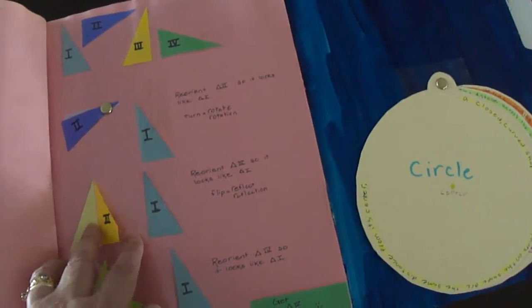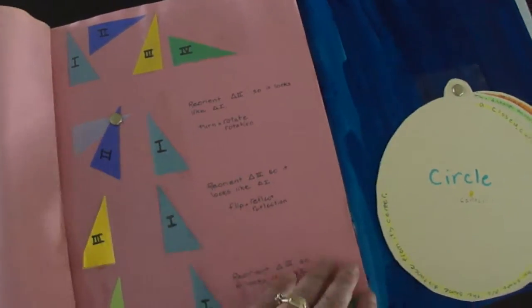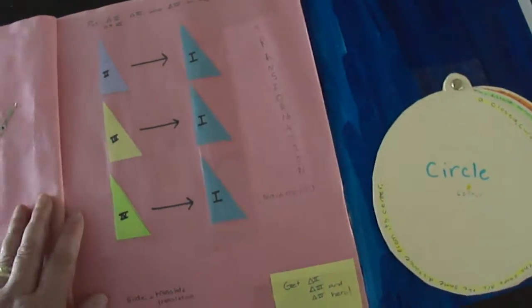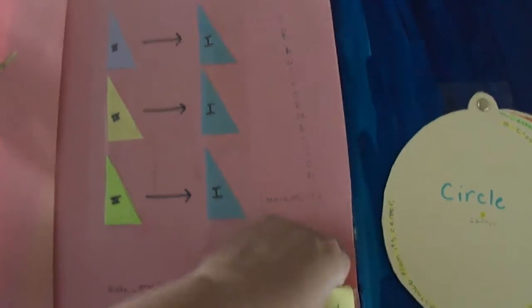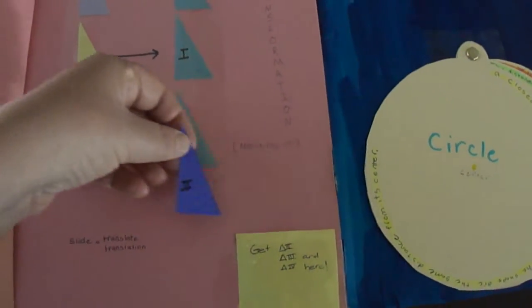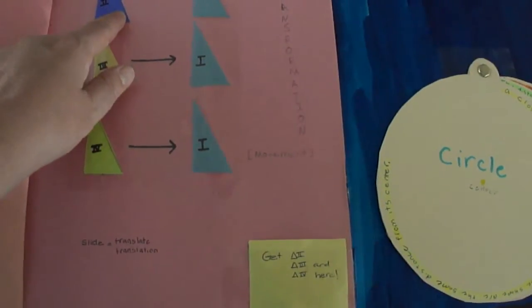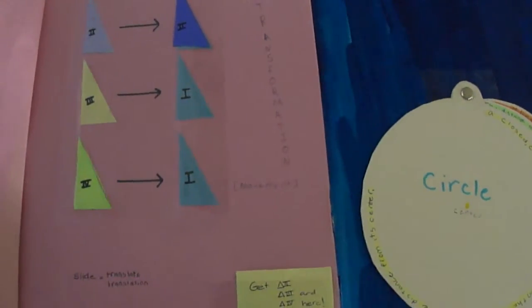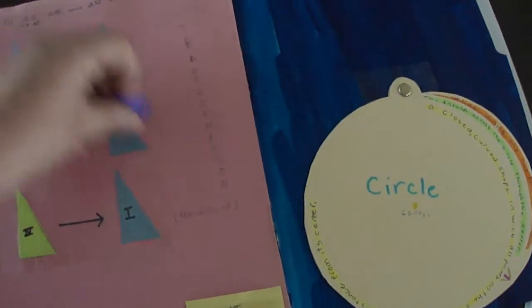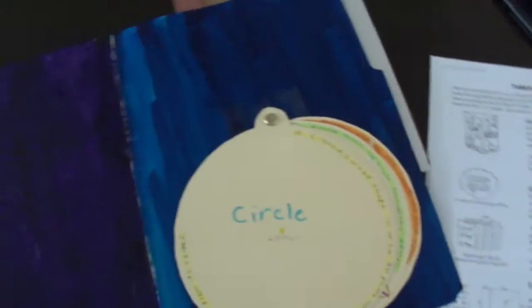This one opens up and you can see that's a flip, and here we've got a rotation. Then on this side we're learning about transformation. Again, down here at the bottom there's a little pocket. You find triangle two, put it on two, and you can slide it over to see that the transformation or movement takes place. Slide means translate is what she learned.